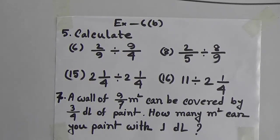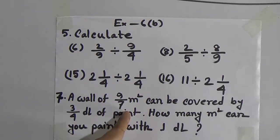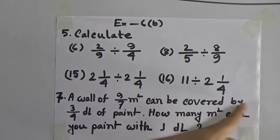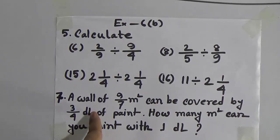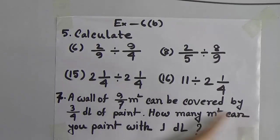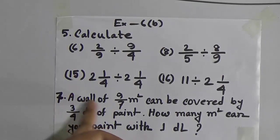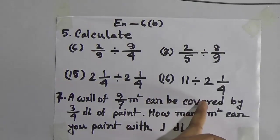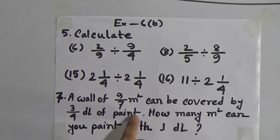Now we shall solve two word problems: word problem number 7 and word problem number 8. Before starting, please read the question first. Word problem 7: A wall of 9/7 square meters can be covered by 3/4 deciliter — DL means deciliter — of paint. How many square meters can you paint with 1 deciliter?